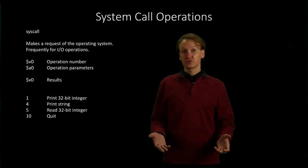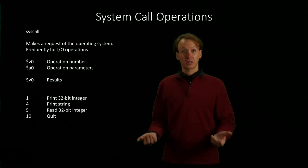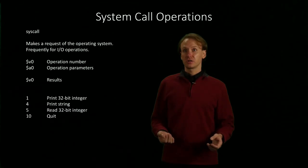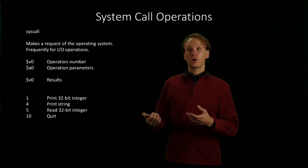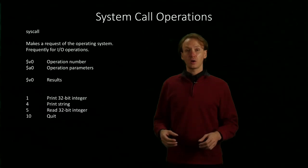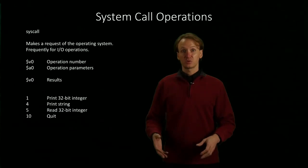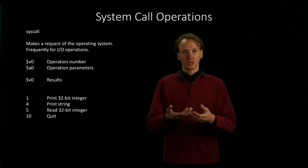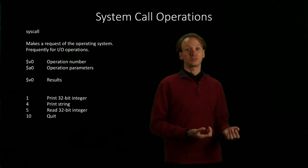If I wanted to print out an integer, I would put 1 into v0, and I would put my integer — say, 42 — into a0, and then I would run my syscall instruction. This would tell the operating system I want to print an integer. It would take that integer out of a0 and then display it on my console.